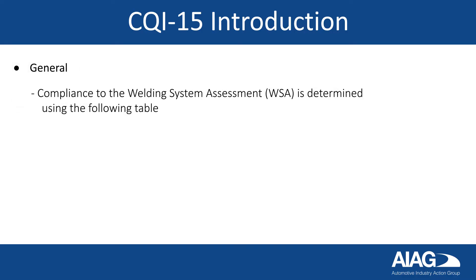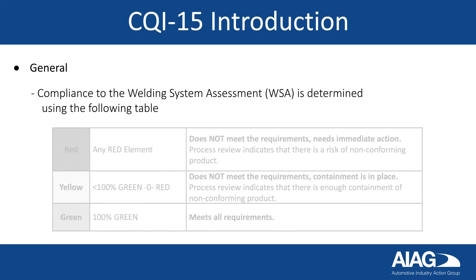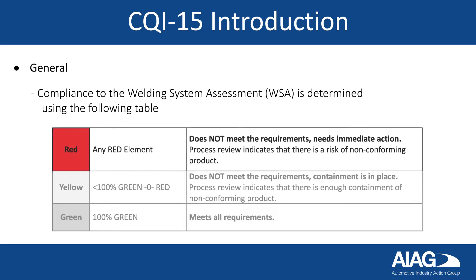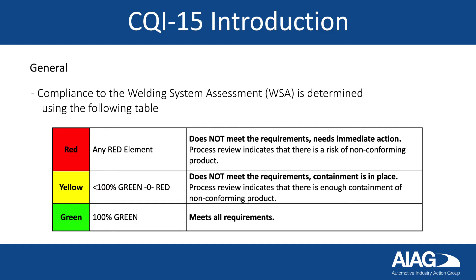Compliance to the Welding System Assessment (WSA) is determined using the following table. RED does not meet the requirements and needs immediate action — process review indicates that there is a risk of nonconforming product. YELLOW does not meet the requirements but containment is in place — process review indicates that there is enough containment of nonconforming product. GREEN meets all requirements.